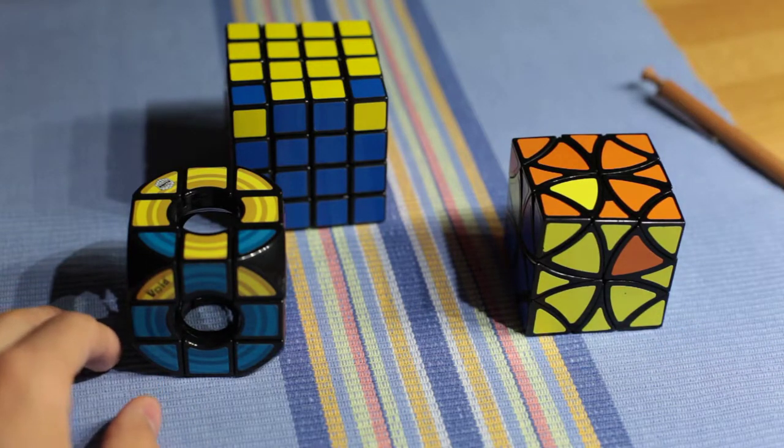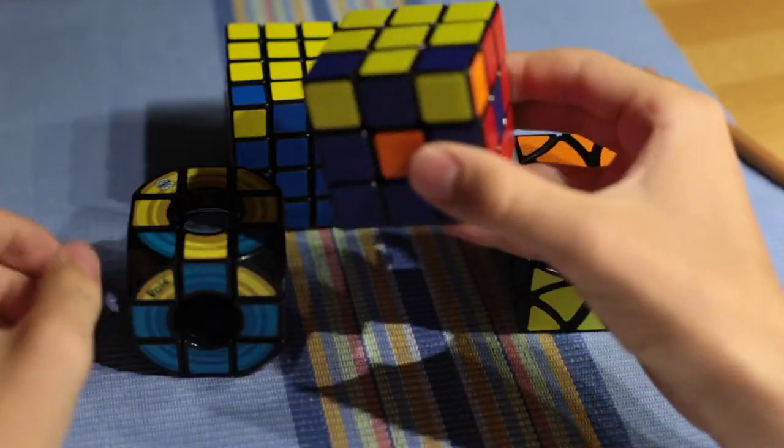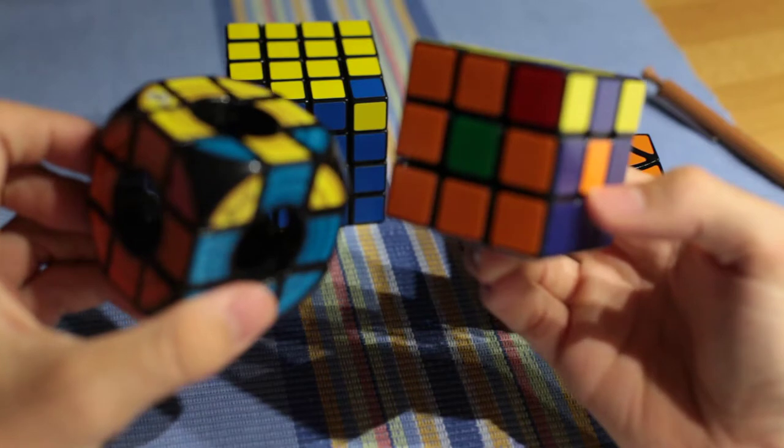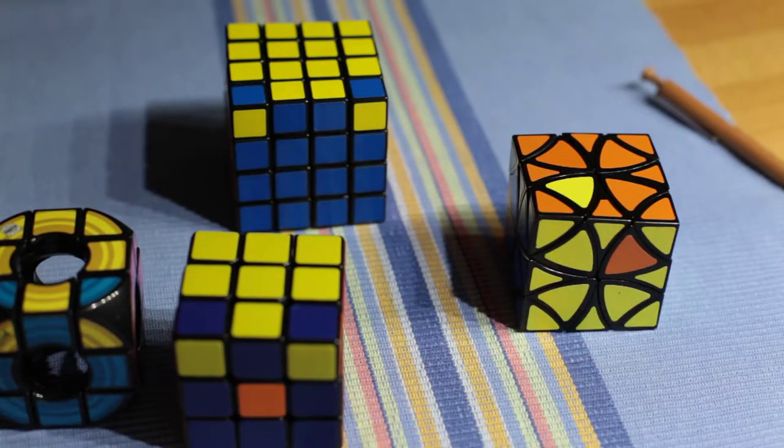Likewise on the Void Cube the source of the parity is hidden because all the middle pieces are missing. Here is the same situation on a regular 3x3.